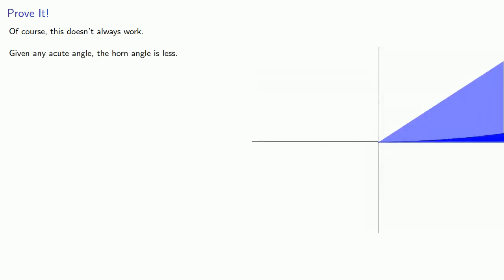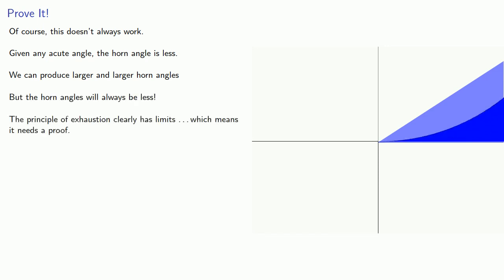Of course this doesn't always work. Let's go back to that tangent. Given any acute angle, the horn angle is less. But we can always produce larger and larger horn angles, but the horn angles will always be less. So the principle of exhaustion clearly has limits, which means it needs a proof.